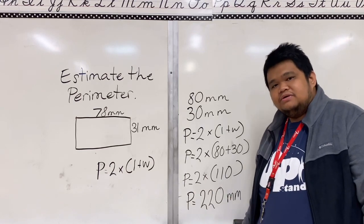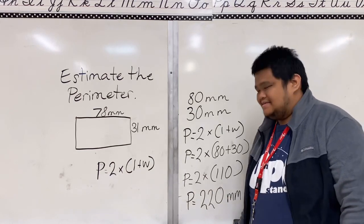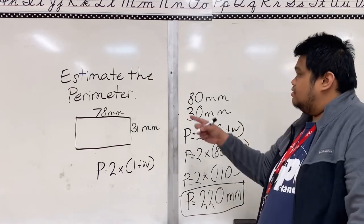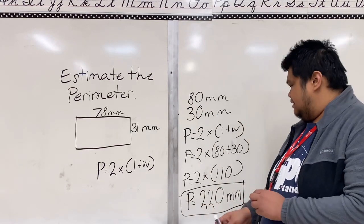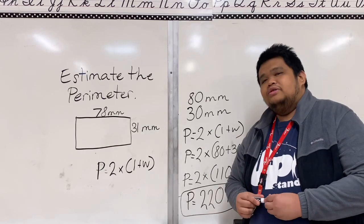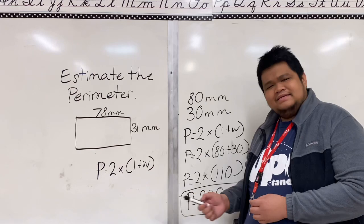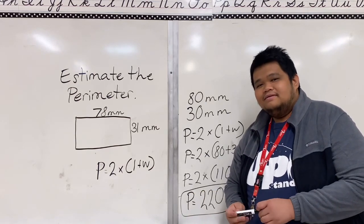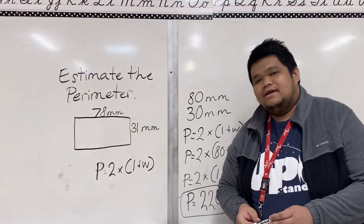Is that our final answer? Yes, you got it right. The perimeter of this problem is 220, and that is the estimate as well. Do you have any questions? Is it easy or too hard? Tell me. I'll see you later.